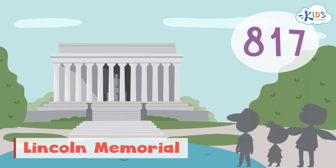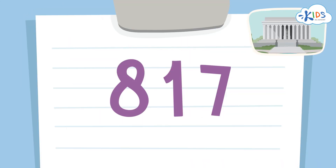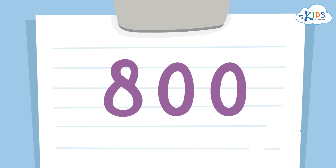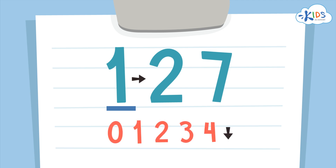The Lincoln Memorial saw 817 visitors. We'll use the strategy of underlining the hundreds place and drawing an arrow to the tens place so we know what numbers we have to look at. I see a 1 in the tens place — I know if it's 4 or lower, we have to round down. The 8 in the hundreds place is underlined, so we have to round down from 817 to 800. Remember to look at the place to the right of the place that you want to round to, and round down if you see a 4 or lower.